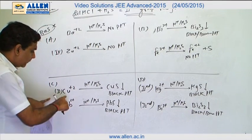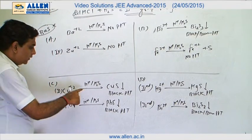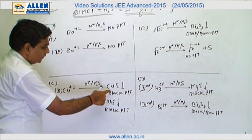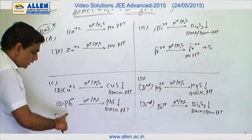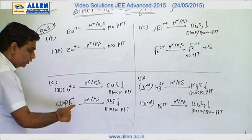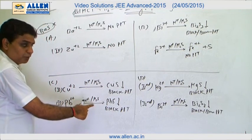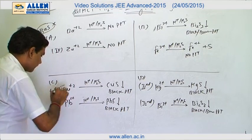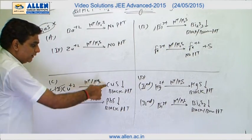In option C, copper plus 2 belongs to second group so when acidic medium H2S reacts with copper plus 2 it produces CuS black precipitate. Lead plus 2 also belongs to second group so in acidic medium H2S produces black precipitate PbS. Both ions produce precipitate of metal sulfide.